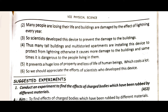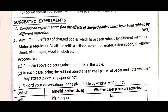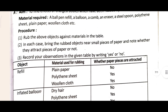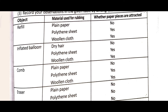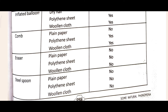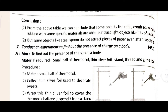Now let's come to the Suggested Experiments. The first experiment is: conduct an experiment to define the effects of charged bodies. The materials required and the procedure are given here. You can see the table showing which objects are used for rubbing and whether paper pieces are attracted or not. The conclusion about what is happening is also given here.